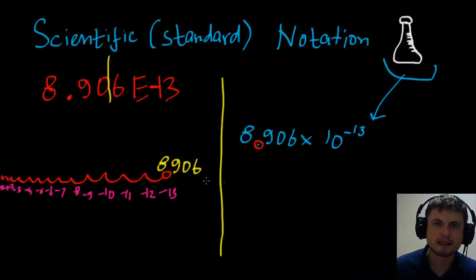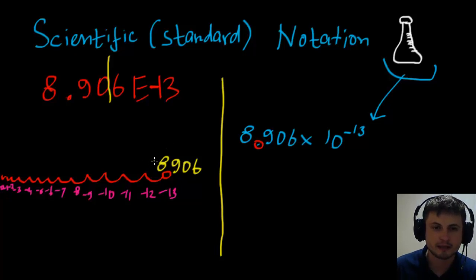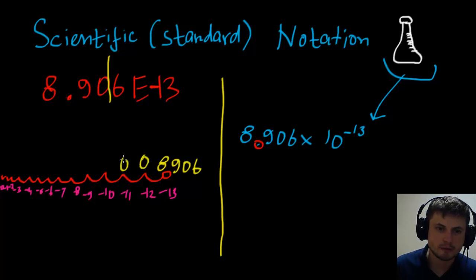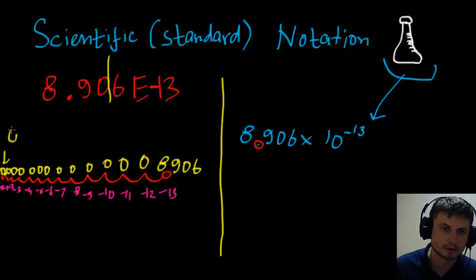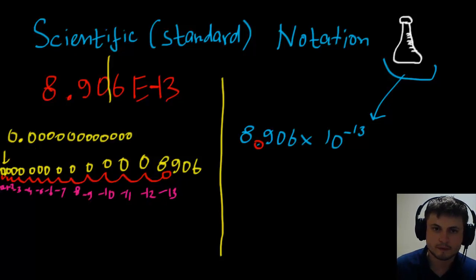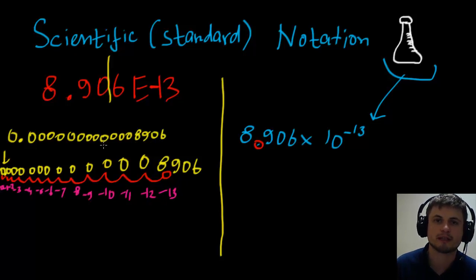Continue counting all the way down to zero, adding zeros to the left as you go. That means we end up with 12 zeros after the decimal point before the digits 8906. So if you zoom in, it looks like: 0. followed by 12 zeros, then 8906. The decimal point is placed right before the 8, after all 12 zeros.